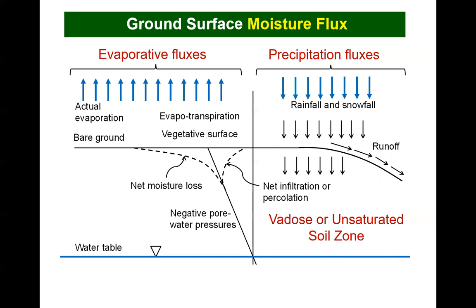The reality is that we do not live in a world where the net moisture flux at the ground surface is zero. Rather, moisture is either falling on the ground surface as precipitation, or leaving it as evaporation or evapotranspiration. This means that the ground surface constitutes a moisture flux boundary condition. The moisture flux boundary condition results in perturbations in the stress state of the soil near the ground surface, adding a new and important challenge for geotechnical engineering applications.